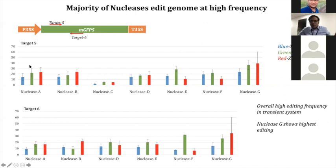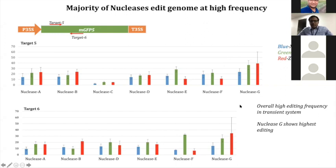We are talking about 100,000 cells, so 10 to 60% editing efficiency means we have edited 10,000 to 60,000 cells in this system. That's incredible, because you don't have to rely upon any external selection system to screen the cells.